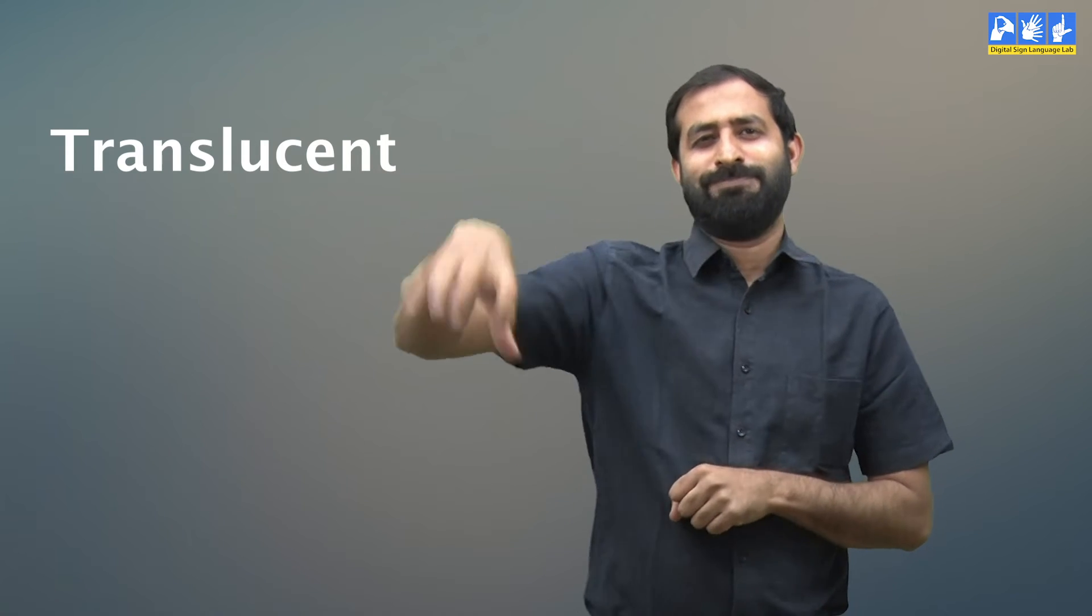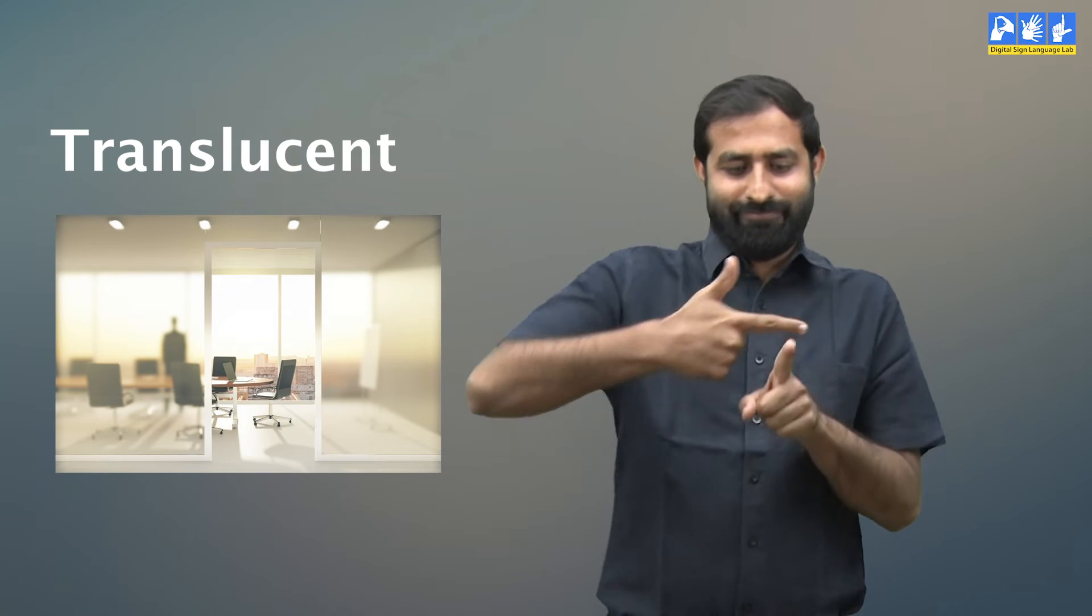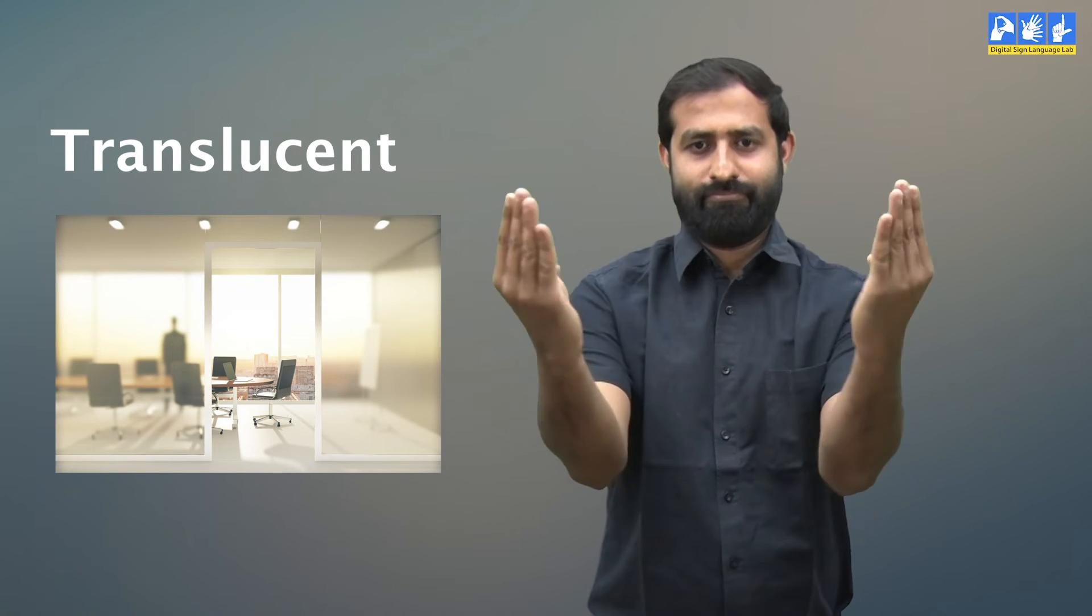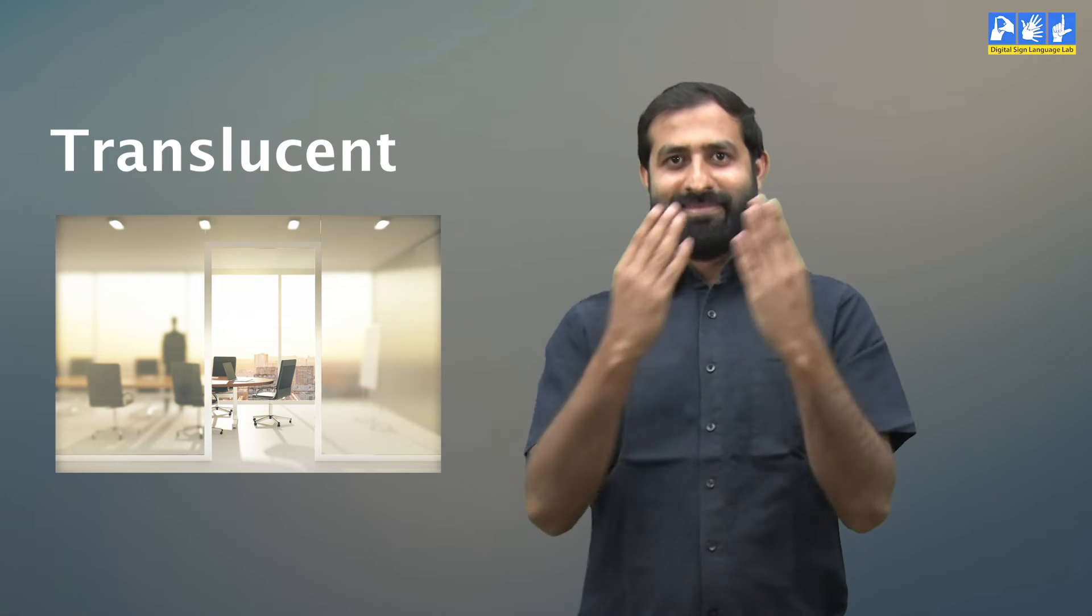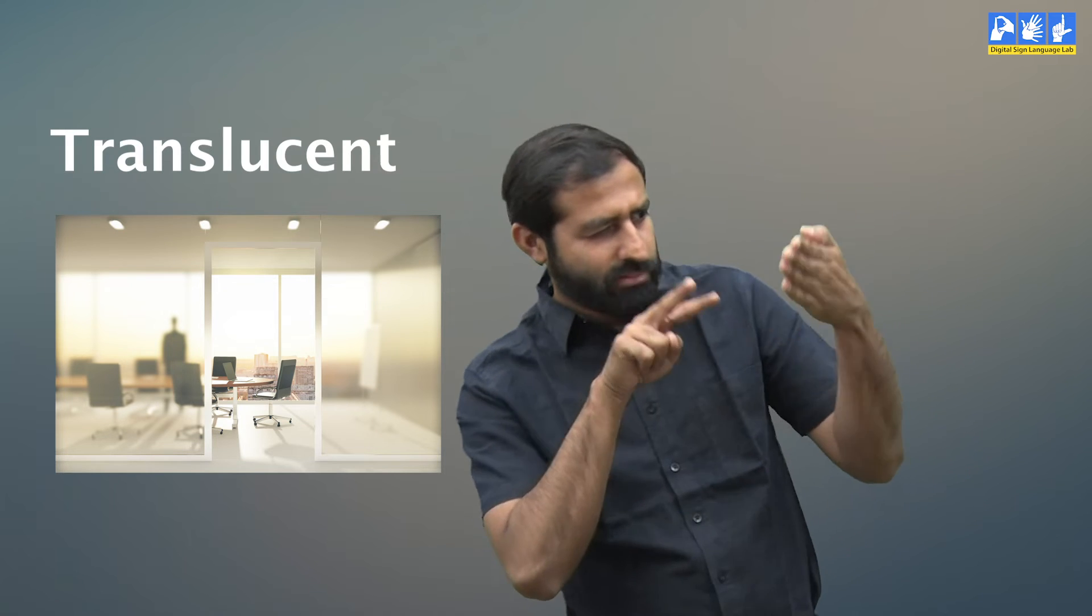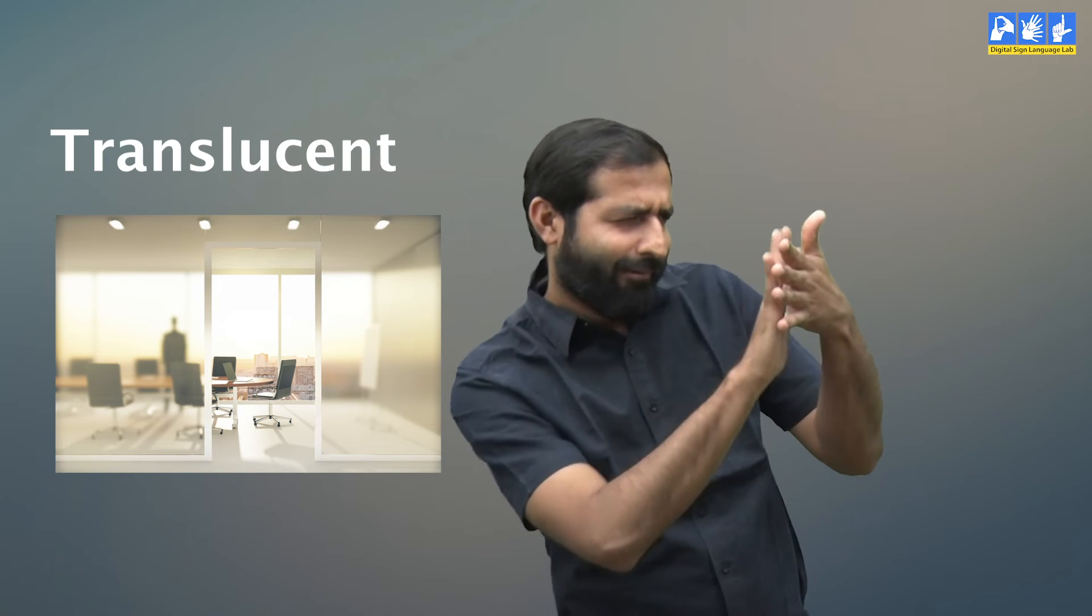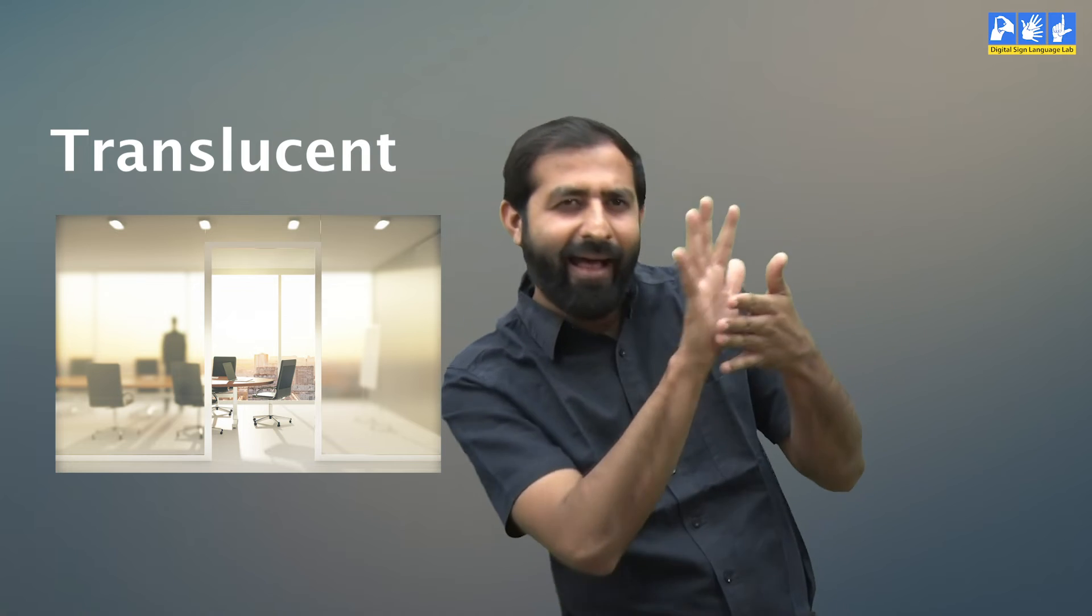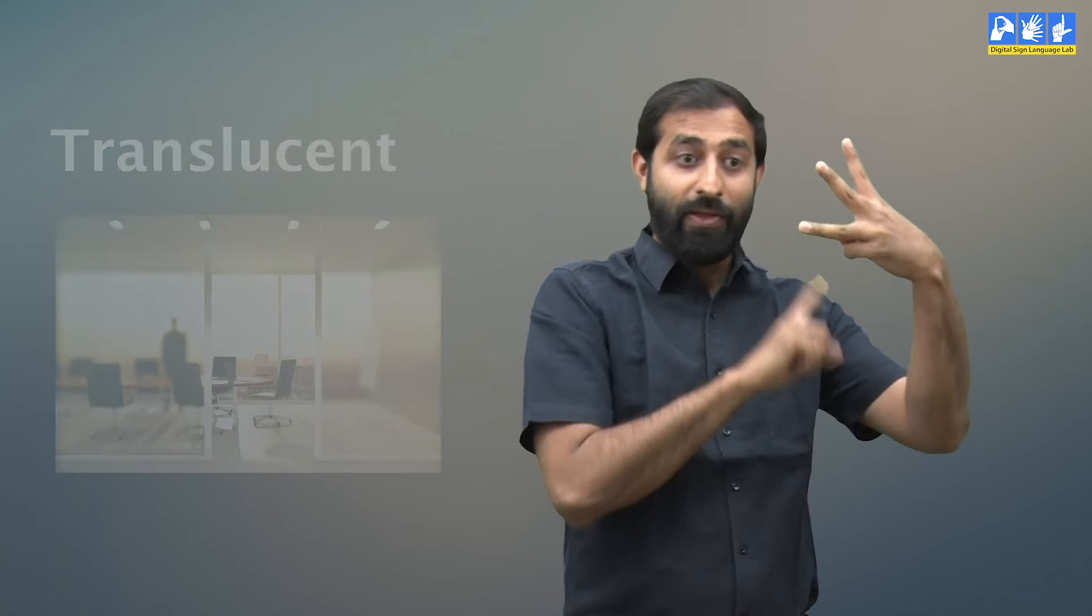Another example, you must have seen partition walls in different offices. Frosted glass are used to make those walls. We can see through them but the vision will be cloudy and fuzzy. These are translucent materials.